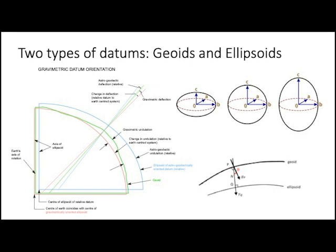This leads to some interesting differences. If you use a plumb line or a level, that's in relation to the geoid by definition, because you're using gravity to define what the local level or local straight-down direction is. This leads to something called the deflection of the vertical, where the difference is between the perpendicular to the geoid and the perpendicular to the ellipsoid. There are two types of datums — geoids and ellipsoids — and they're going to be different. You can see the difference between the red and green lines, and also two different ellipsoids shown as the blue and red lines.